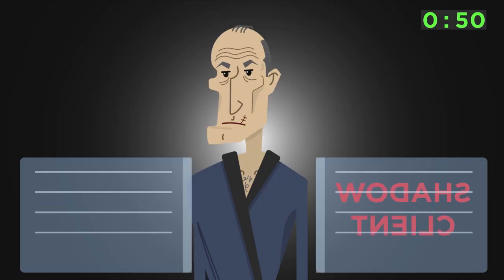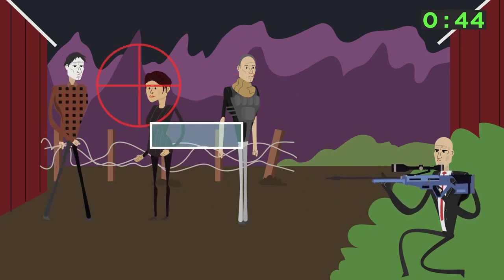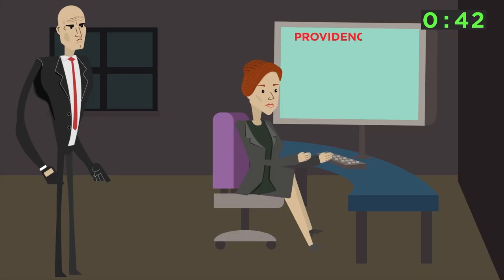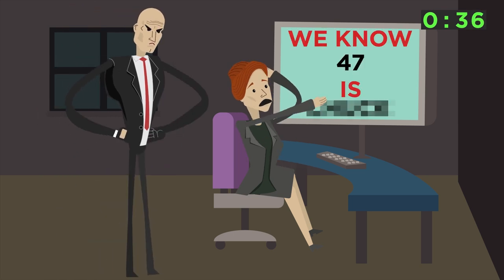ICA pieces together the Shadow Client's connection to the recent hits carried out by 47. Soders insists they take action. 47 is sent to the top secret anti-Providence camp to eliminate militia leaders. 47 and Diana uncover research revealing Providence is more than a myth and has significant influence on global events. Oh, and they know 47's true identity.